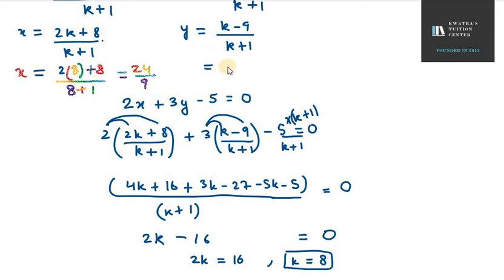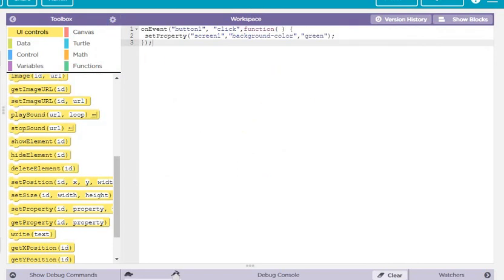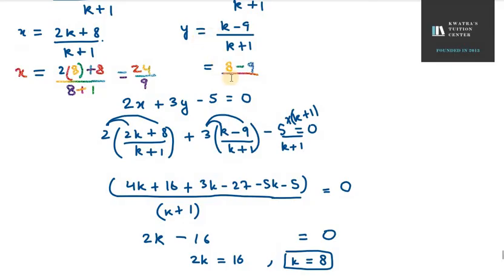Now, we will take the value for y. y will be 8 minus 9 over k plus 1. k plus 1 is 8 plus 1. 8 minus 9 is -1. So you get -1 over 9.